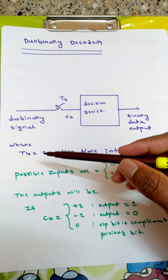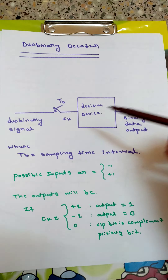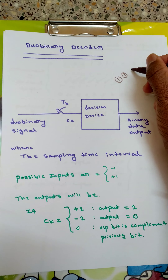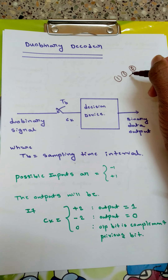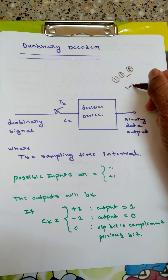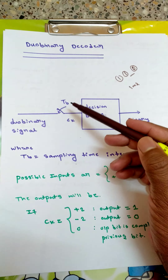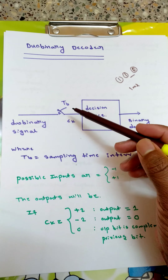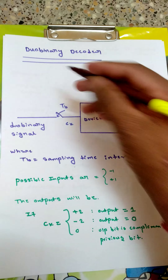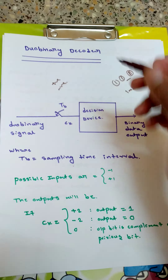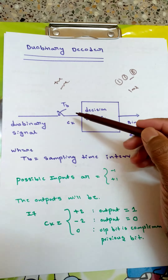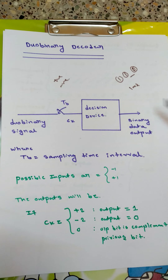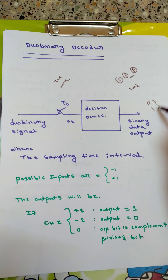tb is the sampling time interval — the time interval between two bits. If it is one millisecond, the switch opens and closes every millisecond, taking one voltage sample. The input duobinary signal is a voltage, either positive or negative. If we have a positive voltage, it is given to the decision device, which decodes it as either zero or one, since we have only two output levels.